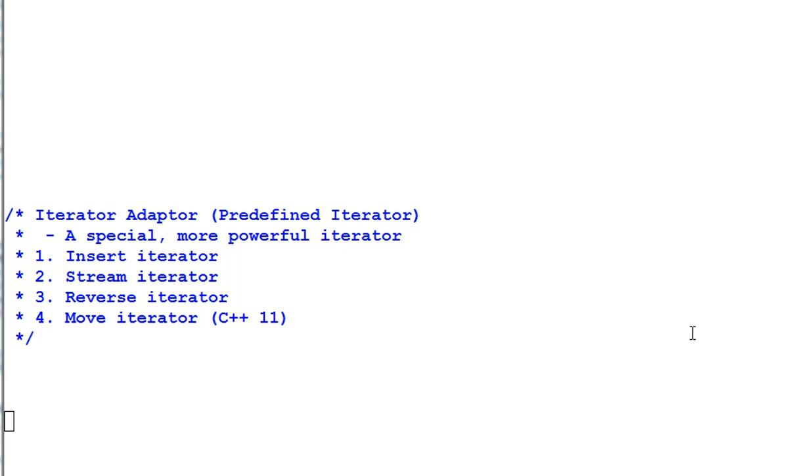Iterator adapter or predefined iterator is a special kind of iterator that does more things than just iterating. There are four kinds of iterator adapters: insert iterator, stream iterator, reverse iterator, and move iterator in C++11.